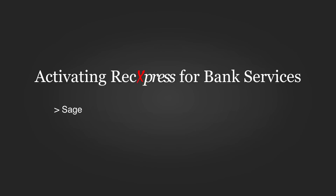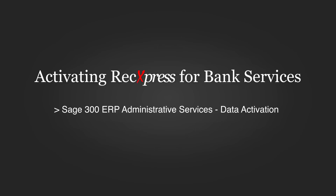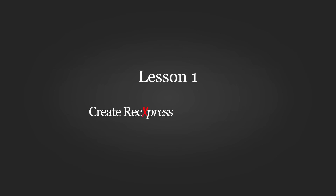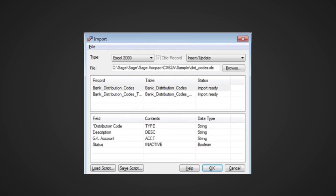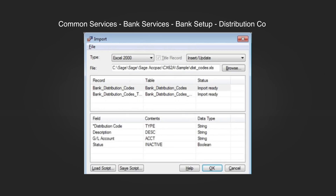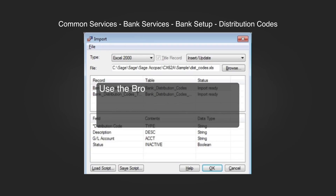Go to Sage 300 ERP Administrative Services, Data Activation, and select Activate RekExpress for Bank Services. For RekExpress sample data, go to Common Services, Bank Services, Bank Setup, Distribution Codes, then select File, Import. Use the Browse button